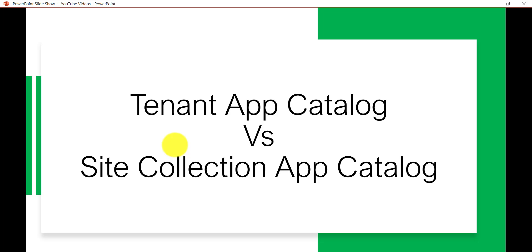So what is the basic difference? In the tenant app catalog, if you upload and deploy an app, the package will be available to the entire site collection in the Office 365 tenant. But if you upload an app to the site collection app catalog, it will be available only to that site collection and the sub-sites under it. That's the main difference.